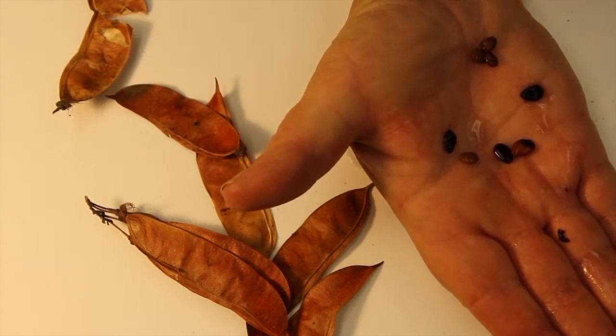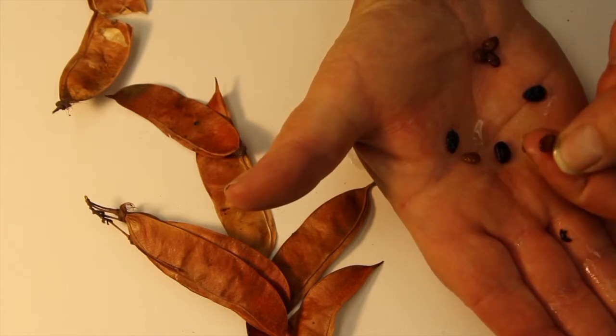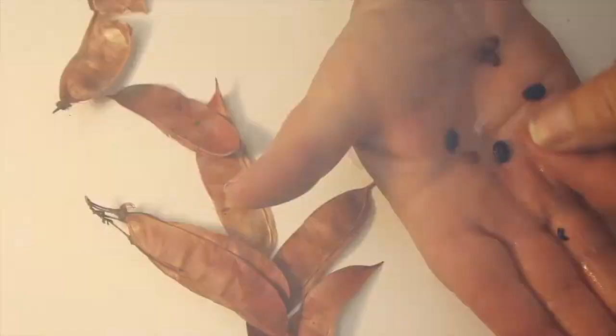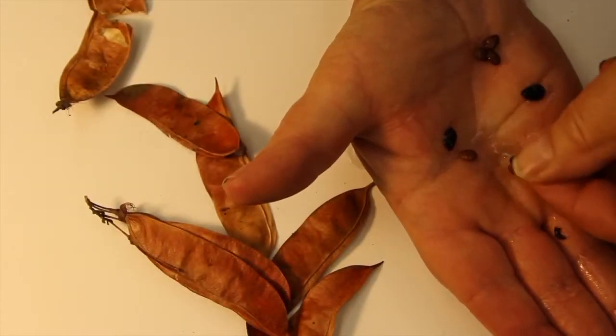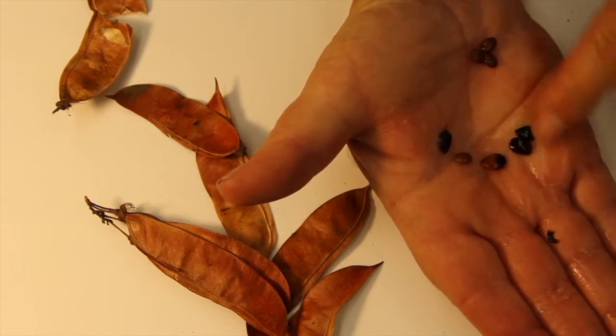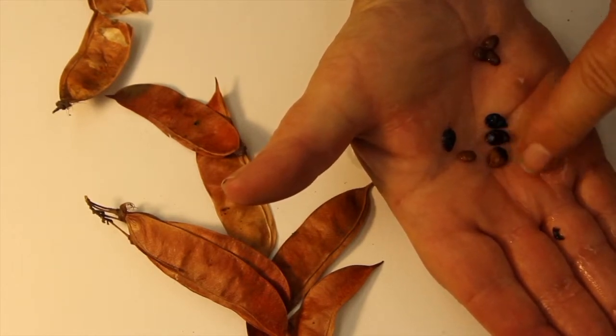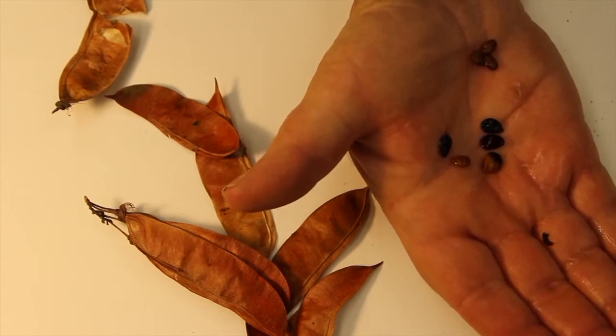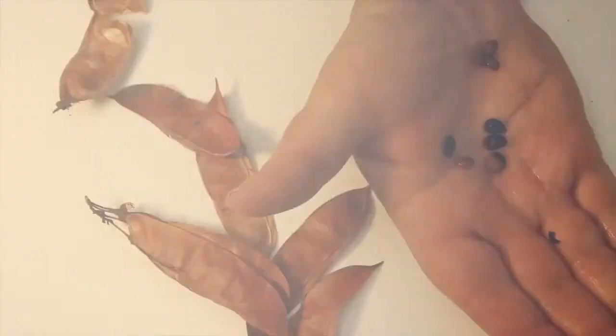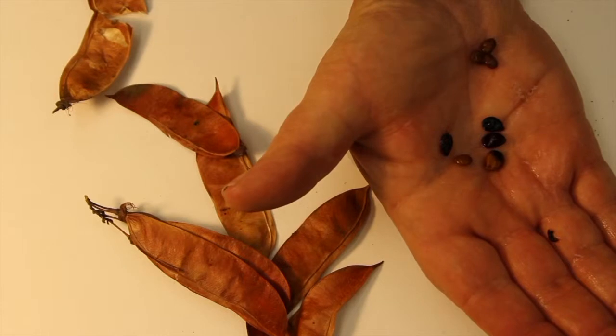So these plants are ready to start germinating, or at least the seed coat's been breached. The little embryo, the little baby plant inside, has got enough water now in it to start to be biologically active and start to grow.